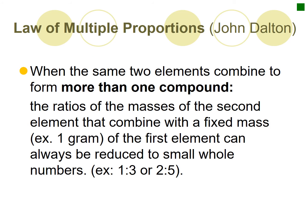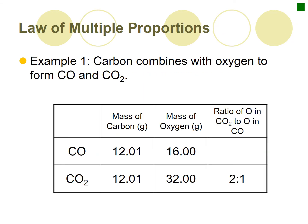The law of multiple proportions states that when two elements combine to form more than one compound, the ratio of masses of the second element that combine with a fixed mass — we always use one gram — of the first element can always be reduced to simple whole numbers such as 1 to 3 or 2 to 5. For example, CO (carbon monoxide) and CO2 (carbon dioxide) — carbon combines with oxygen to form only these two compounds.